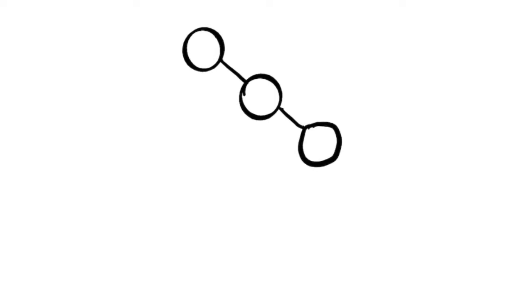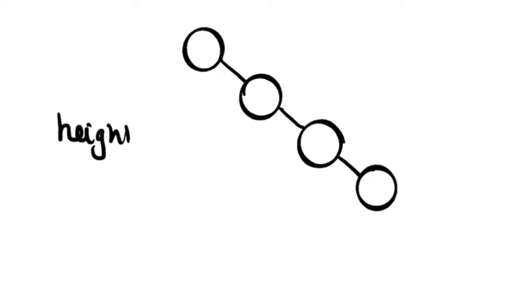Let's take one more example. This is a root node. We have a child of the right node which is a child of the root node. Again, we have another right node, and again. The height of this particular binary tree is 3. We started from the root node and just calculated the longest depth from the root node to reach any of its leaf nodes.